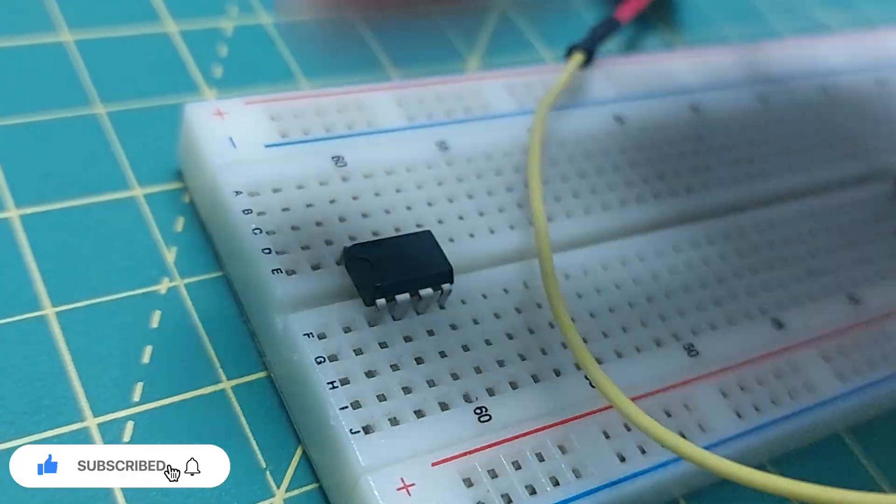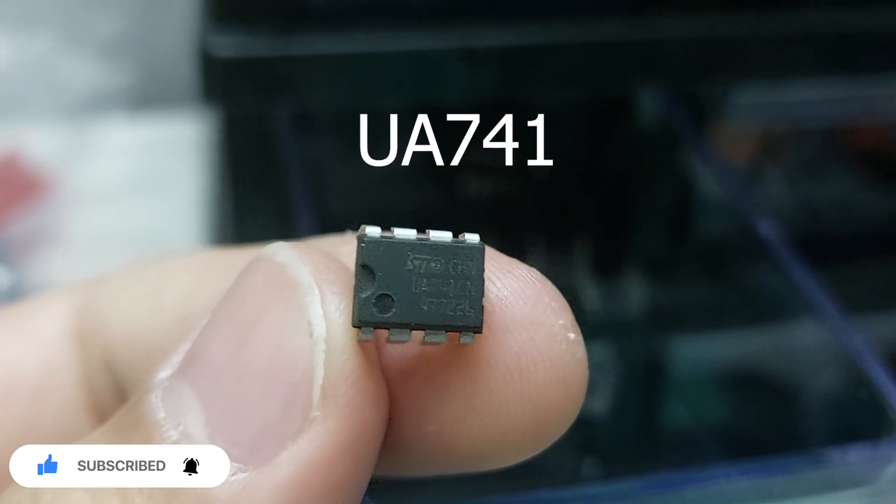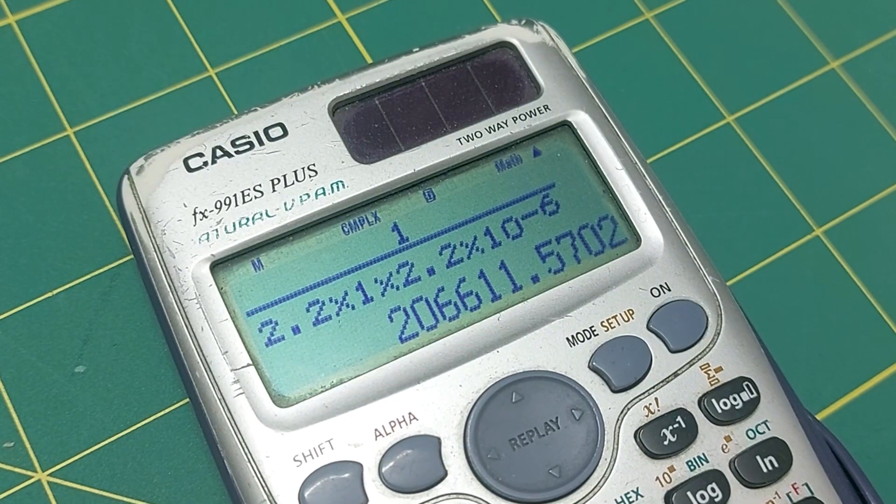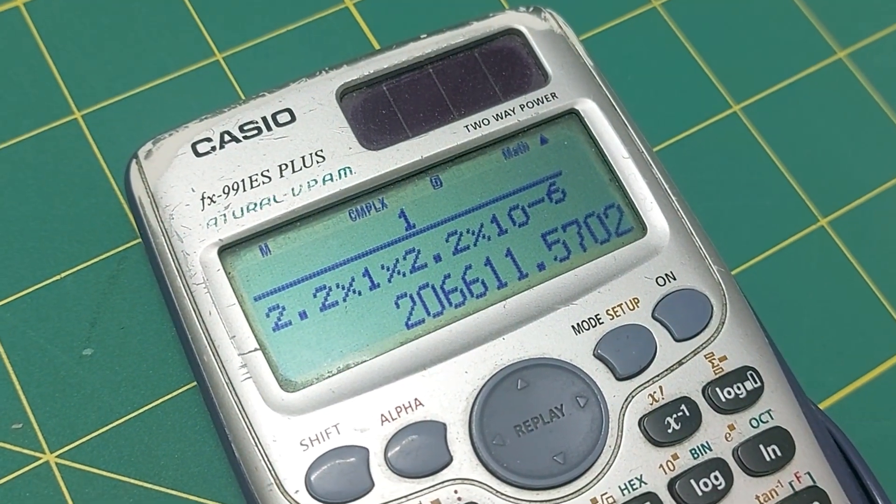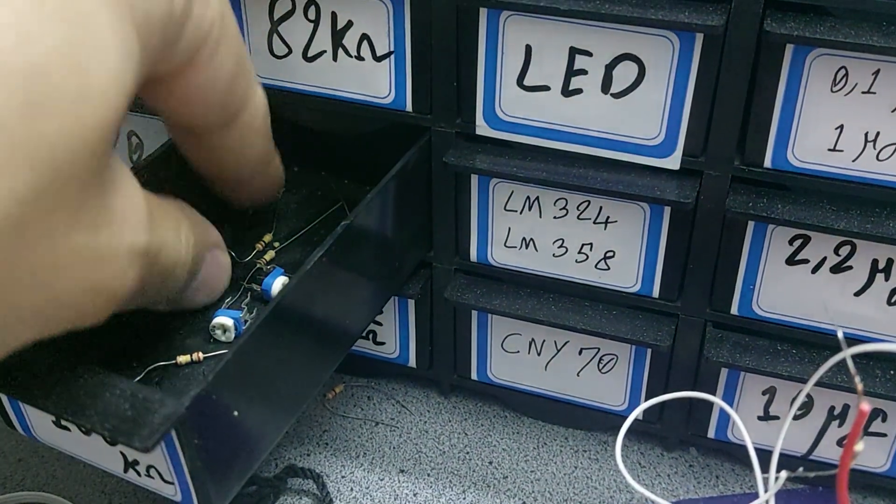One of the most common op-amps is the UA-741, so we'll start with that chip. After calculating the resistor and capacitor values, I configured the circuit to oscillate at a frequency of 1 Hz.